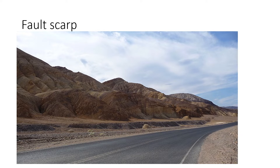Faulting is still happening in Death Valley. The cliff that results from the downward movement of rock along a fault is called a scarp. Here you can see an 8-foot fault scarp on the side of Badwater Road, just south of its intersection with Route 190. We don't know the age of the scarp, but there must have been a large earthquake accompanying the down-dropping of the valley floor on the right relative to the mountains on the left.